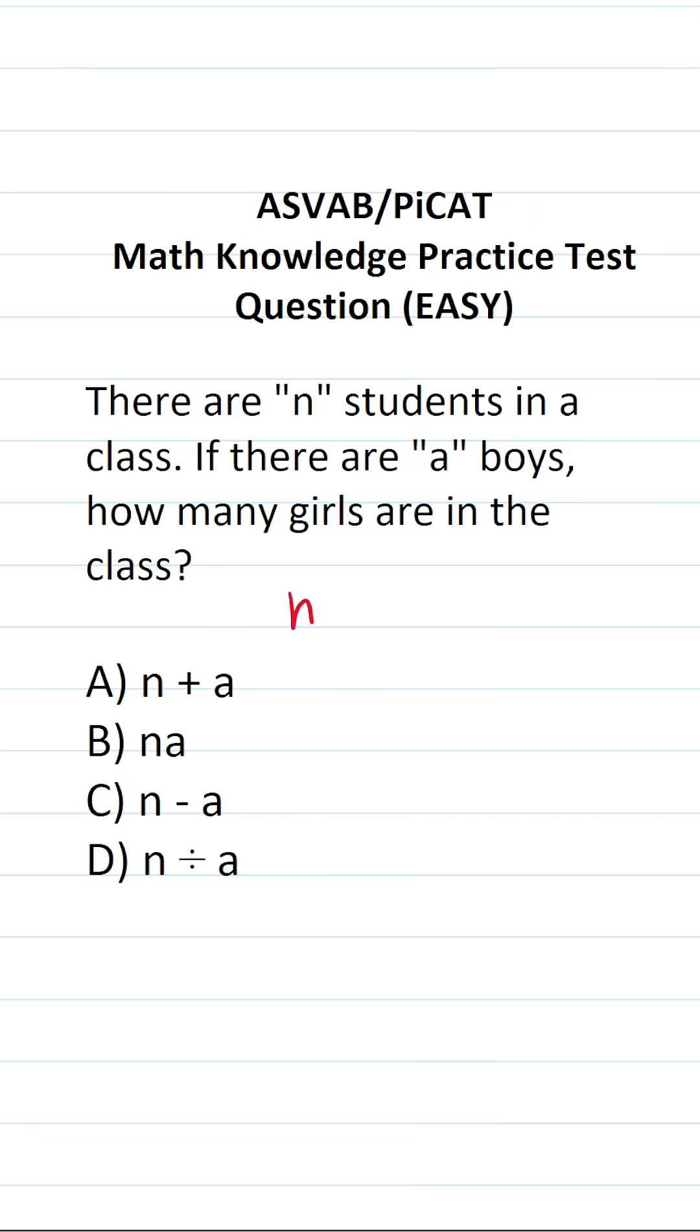We know that n, according to the problem, represents the total number of students in the class, and a represents the number of boys in the class.